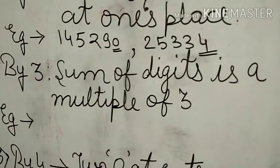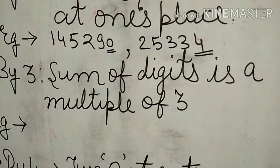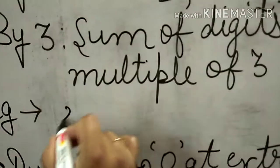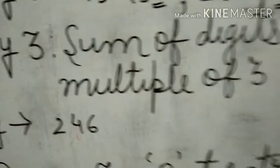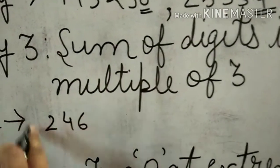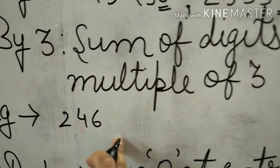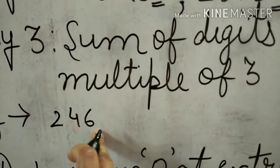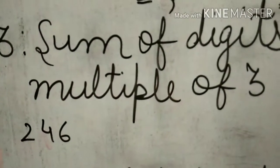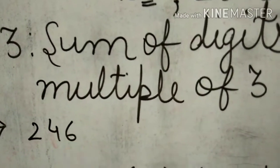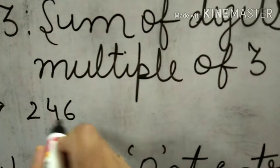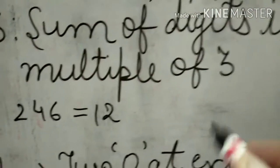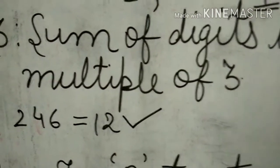Divisibility by 3: sum of digits is a multiple of three. If we take any number like 246, we add all the digits. 2 plus 4 plus 6 gives us 12. Twelve is a multiple of three because it comes in the table of three, so this number is divisible by three.